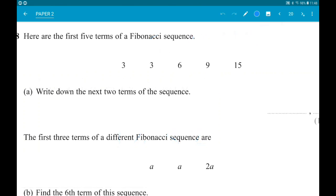Number 28: Here are the first five terms of a Fibonacci sequence: 3, 3, 6, 9, 15. Part A: Work out the next two terms. In a Fibonacci sequence you add the two previous terms to get the next one. 3 add 3 is 6, 3 add 6 is 9, 6 add 9 is 15. So our next one is 9 add 15, which is 24. Then 15 add 24, which is 39.